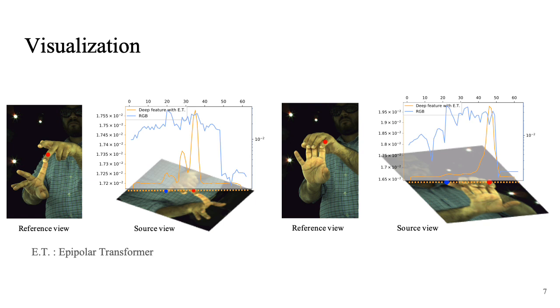For a given point on the reference view, our epipolar transformer can successfully locate the corresponding point on the source view. However, the RGB feature matching failed to do so.